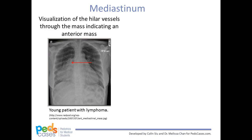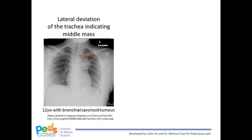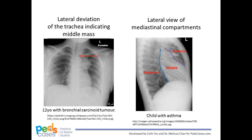With the anterior mediastinum, a mnemonic called the terrible T's can be used to remember the differential diagnosis. The five T's consist of thymus tumors, teratoma and germ cell tumors, thyroid tumors, thoracic aorta, and terrible lymphoma. Further investigations done for our patient show that they had lymphoma. Lateral deviation of the trachea and widening of the perivertebral line are indicative of a middle mediastinal mass. Lastly, the splaying or destruction of the posterior ribs and extension of the mass above the superior clavicle are indicative of a posterior mediastinal mass. In cases where the location is uncertain, a lateral film will help further delineate the location.